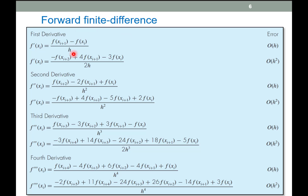All of these are forward finite differences because we're always going forward: x_i, x_{i+1}, x_{i+2}, and so on. For the higher-order terms, we need x_{i+3} and x_{i+4}. In the most accurate version, we actually need six terms up to x_{i+5}.